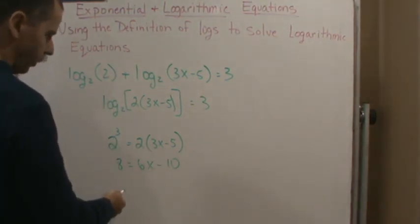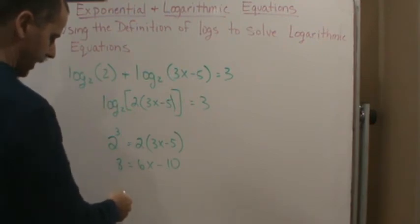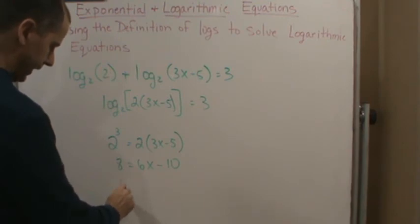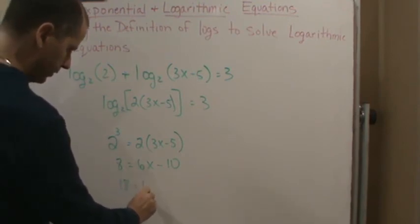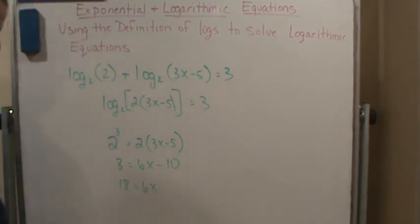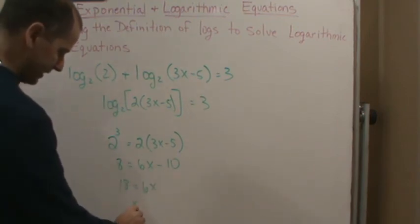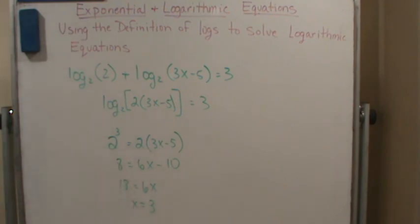What do I do? I just add 10 to both sides and divide by 6. So if I add 10 to both sides, I get 18 equals 6 times x, and then divide both sides by 6, and I get x equals 3.